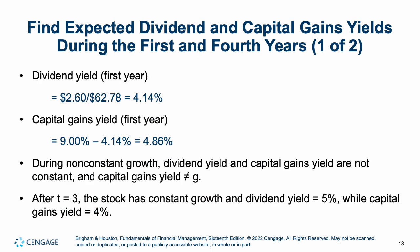In this situation, dividend yield for the first year is 4.14% and capital gains yield is 4.86%. During non-constant growth, dividend yield and capital gains yield are not constant, and capital gains yield does not equal growth — whereas with constant growth, they do. After time 3, the stock has constant growth: dividend yield 5%, capital gains yield 4%, achieving the same relationship as in the constant growth example.